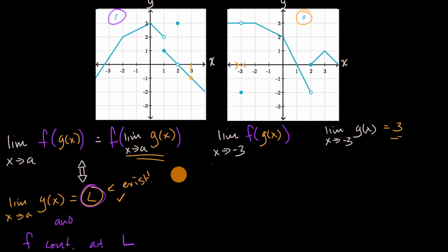And so we could say that this limit is going to be the same thing as f of the limit as x approaches negative three of g of x.